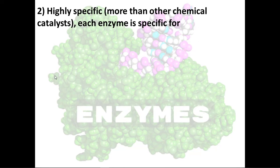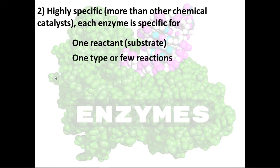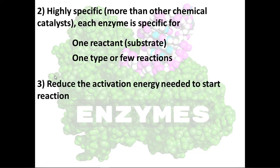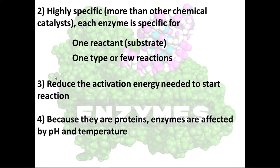The second property is that they are highly specific — specific for one substrate or one reactant, and they can only perform one type or very few types of reactions. This is because of the specific shape of the active site that can only combine with very few structures or reactants. The third is the main function of the enzyme: they are used to reduce the activation energy needed to start the reaction. And because they are proteins, they are affected by multiple factors, especially pH and temperature.